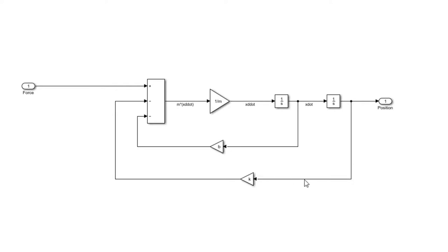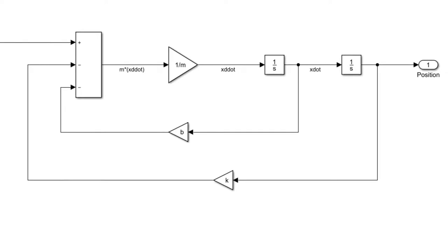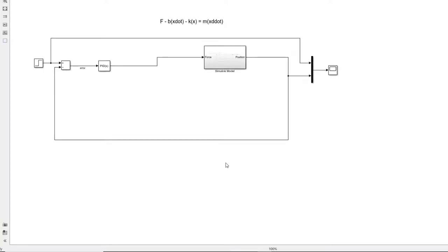This is our Simulink model — you can double-click it to see what's inside. Now let's move to the second technique using Simscape components to model the same spring-mass-damper system. This time I won't use any mathematical equations; instead I'll use the physical construction of the system. The first thing needed is a mass.